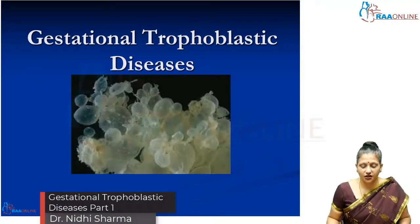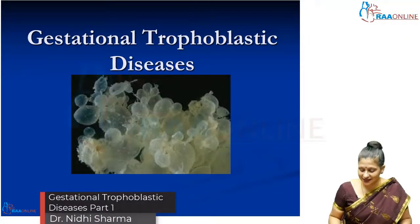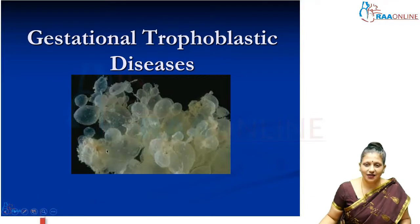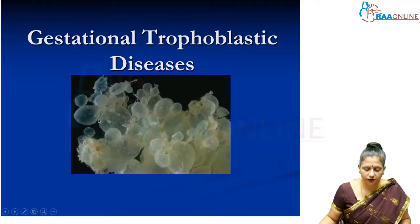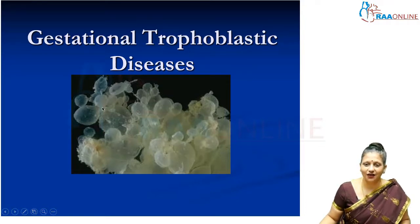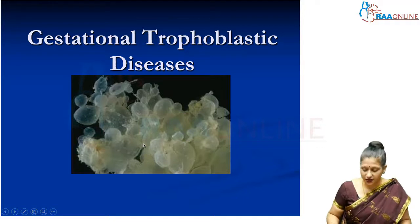Today's topic is gestational trophoblastic disease. The vesicles you are seeing here on the screen are the degenerated cyst-like spaces in the chorionic villi which are filled with fluid. These are also called grape-like vesicles and they are very characteristic of gestational trophoblastic disease.